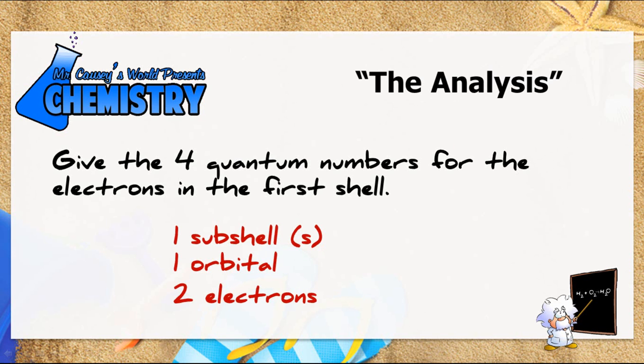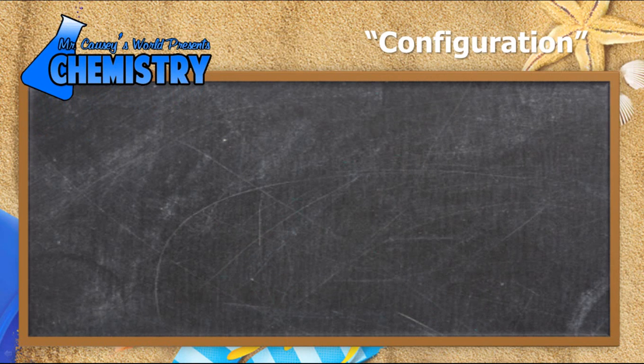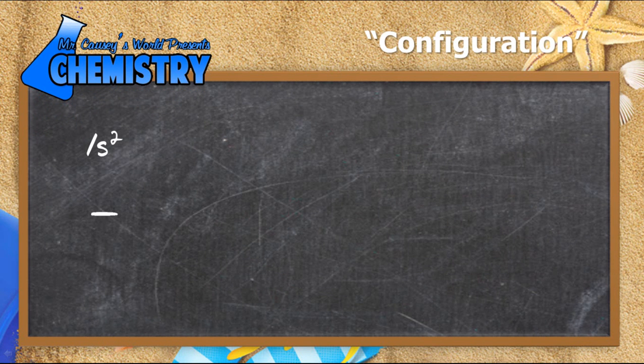To the magic blackboard. Our configuration, as we said, is 1s². And our orbital notation is going to be one sub-energy level, s, which is zero. The numerical value of s is zero. And then we're going to have two electrons in there. Now this is going to be pretty easy to figure out from here.